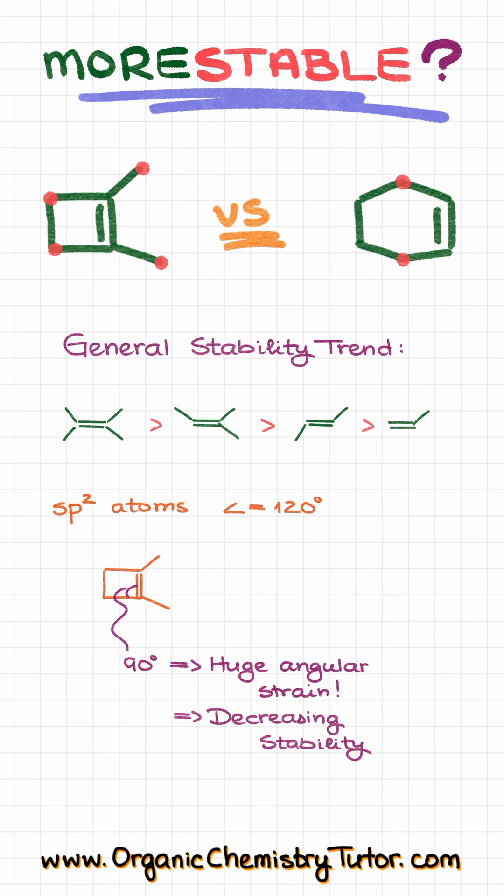So, even though the molecule on the left has more groups around our double bond, the molecule on the right is going to be significantly more stable due to the absence of the angular strain that you would have in a four-membered ring.